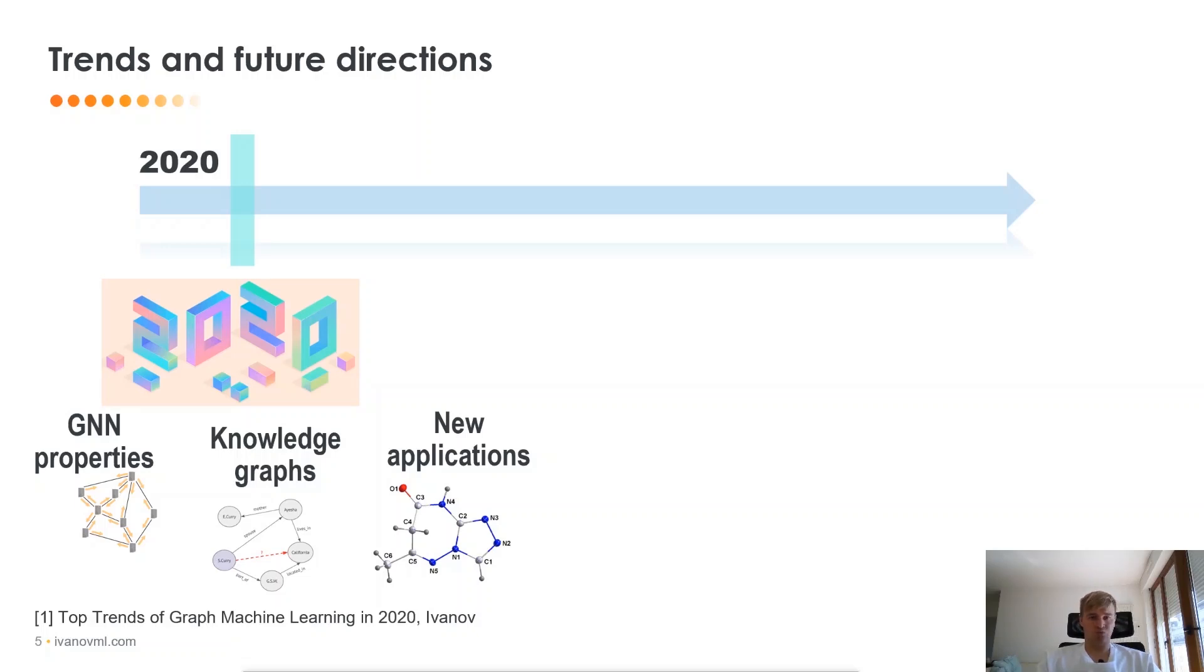The second one was knowledge graphs. How can we use the facts about this world to facilitate some applications? For example, recommendations or chatbots and so on.